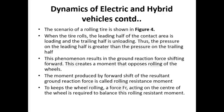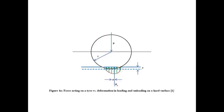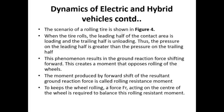The scenario of the rolling tire is shown in this figure. When the tire rolls, the leading half of the contact area is loading and the trailing half is unloading. Thus the pressure on the leading half is greater than the pressure on the trailing half. This phenomenon results in the ground reaction force shifting forward, creating a moment that opposes rolling of the wheels. The moment produced by the forward shift of the resultant ground reaction force is called the rolling resistance moment.